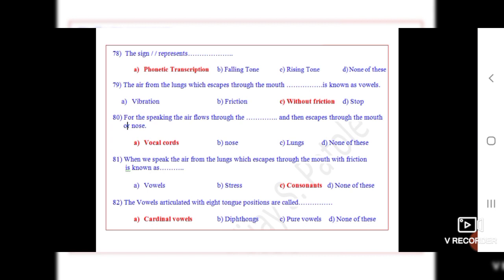Question 81: When we speak, the air from the lungs which escapes through the mouth with friction is known as dot dot dot. The correct option is C, consonants.